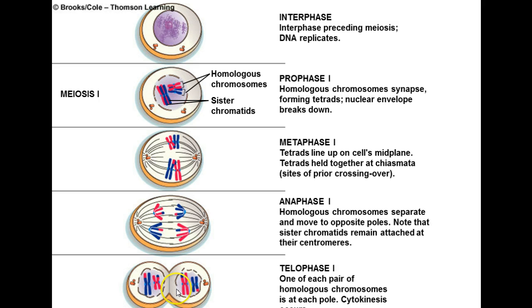Cytokinesis divides the cytoplasm and separates it into two new cells. All the way through this first division — interphase, prophase 1, metaphase 1, anaphase 1, telophase 1 — the cells are diploid.